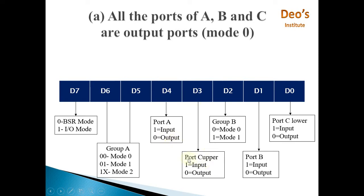D3 selects whether port C upper will work as input or output. D2 is for group B mode selection — zero means group B acts in mode 0, one means mode 1. D1 selects whether port B will work as input or output, and D0 selects the input/output operation for port C lower.